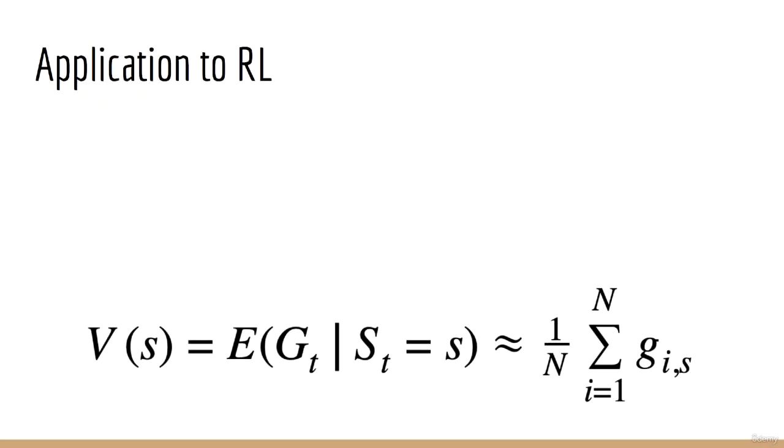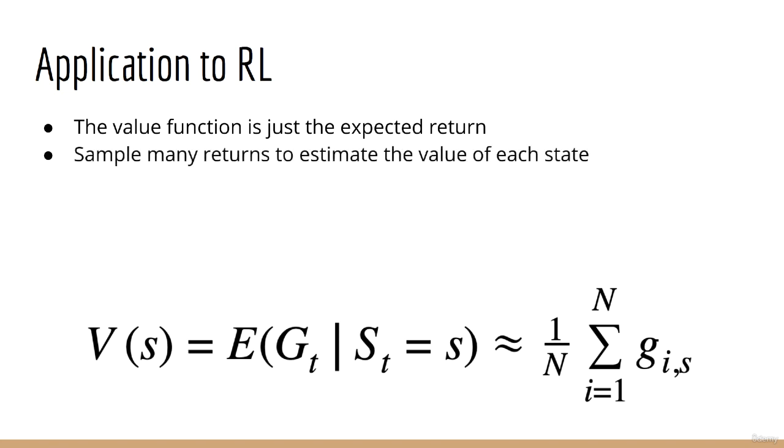So what does this have to do with reinforcement learning? Well, remember that the value function is simply the expected return. Therefore, using the sampling approach, what we can do is sample a set of returns for each state in the state space and take the average. That will give us an estimate of the value of each state.